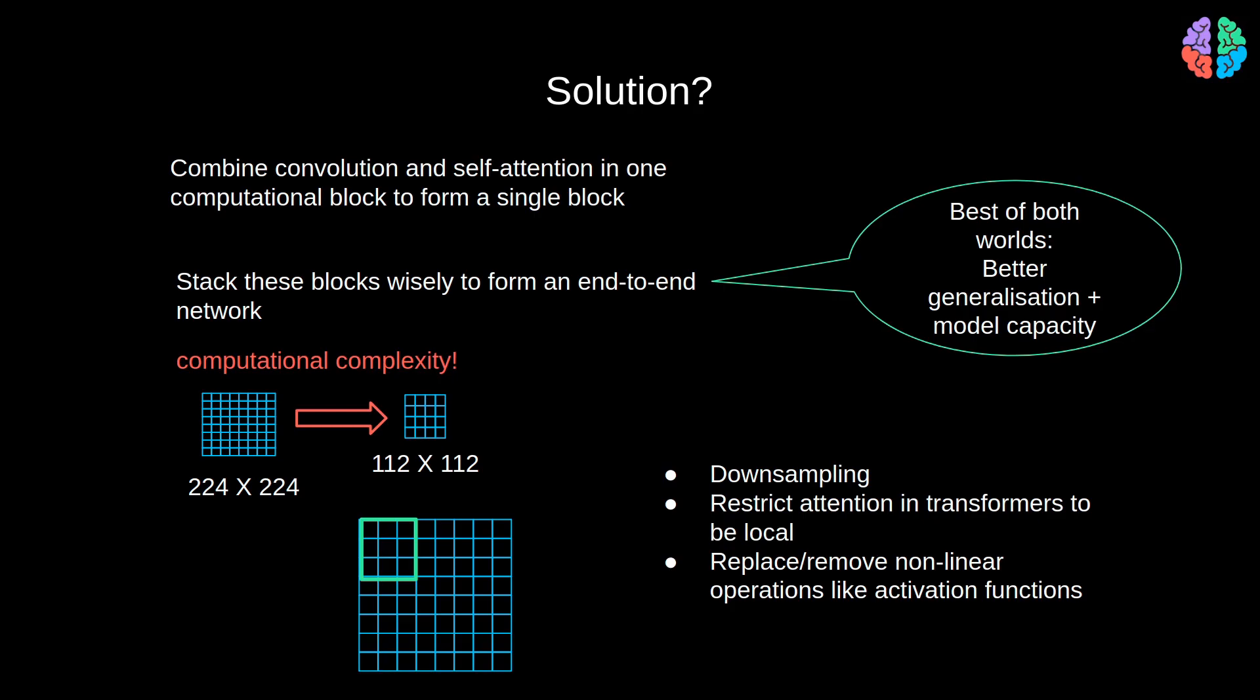Lastly, reducing or even removing non-linearities like softmax activation can also reduce the computation. The solution chosen in CoAtNet is that of downsampling which seems to work far better than the other two approaches. To understand what I mean, let's look at the CoAtNet architecture and take it from there.